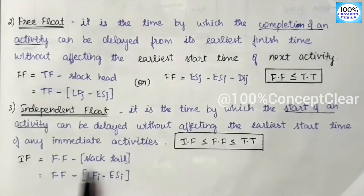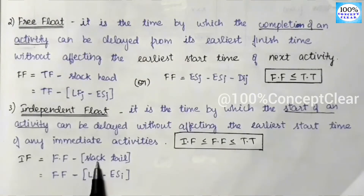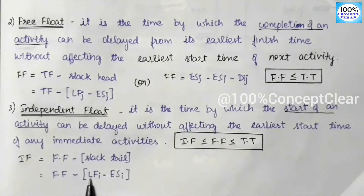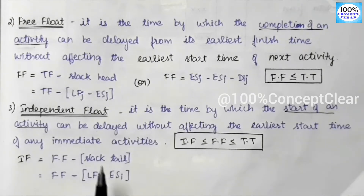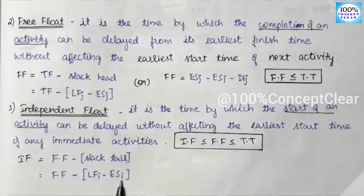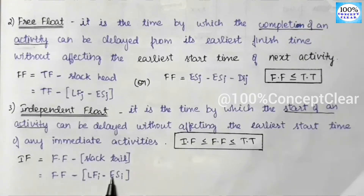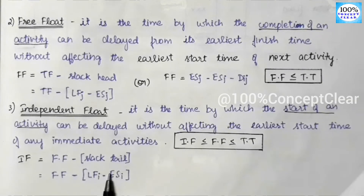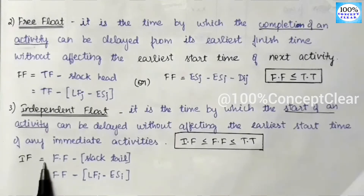Slack Tail refers to the starting event, denoted as i. Slack Tail = Late Finish of starting activity minus Early Start of starting activity. So Independent Float = Free Float minus Slack Tail.